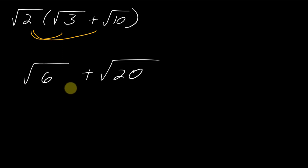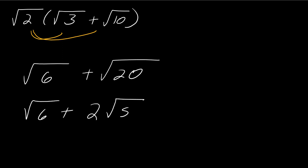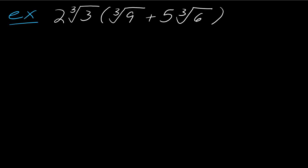Upon further review, I can see that I can simplify the square root of 20. So this becomes the square root of 6 plus the square root of 2 times the square root of 5, because 4 is the largest perfect square that goes into 20. Why don't you do this one and hit play when you're ready.